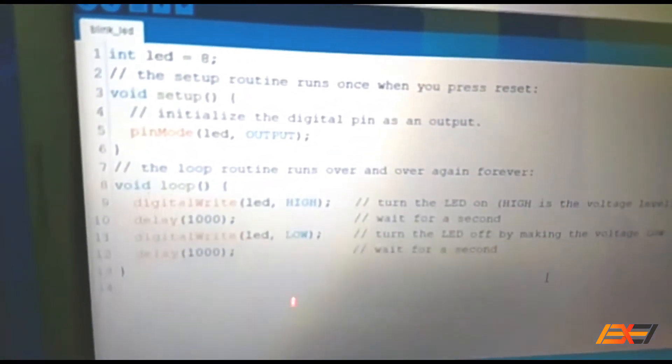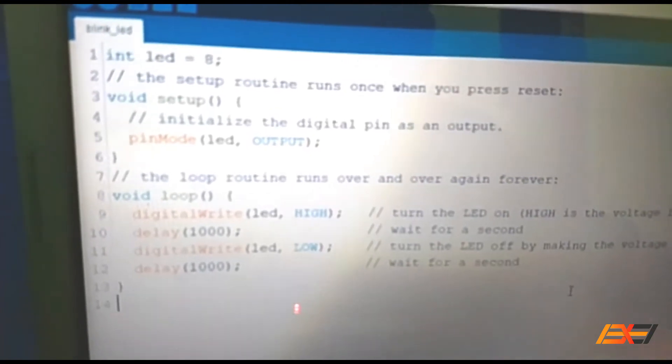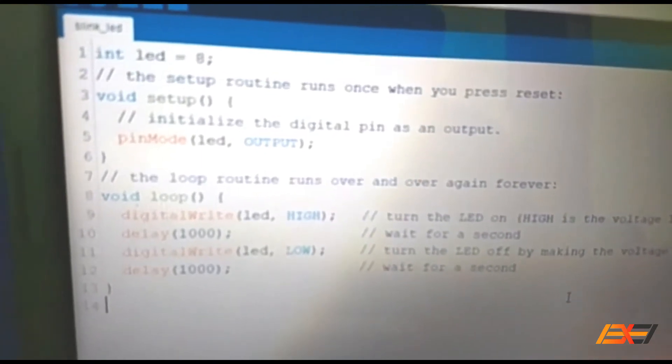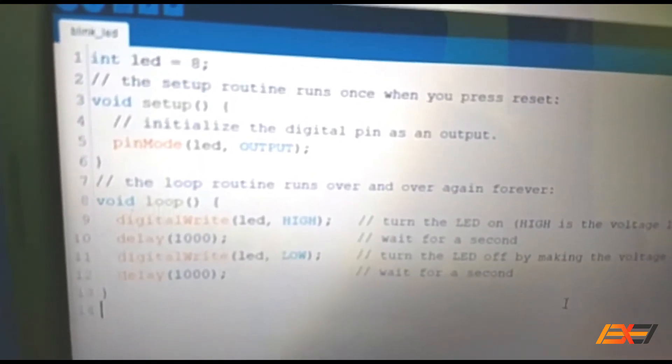Here is the program. We have defined int led = 8, which is the digital pin. In void setup, we have initialized the pin mode LED as output because we want the LED to blink.